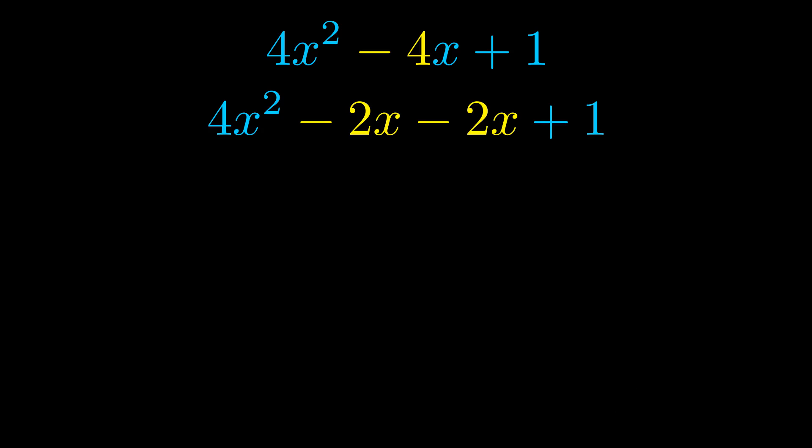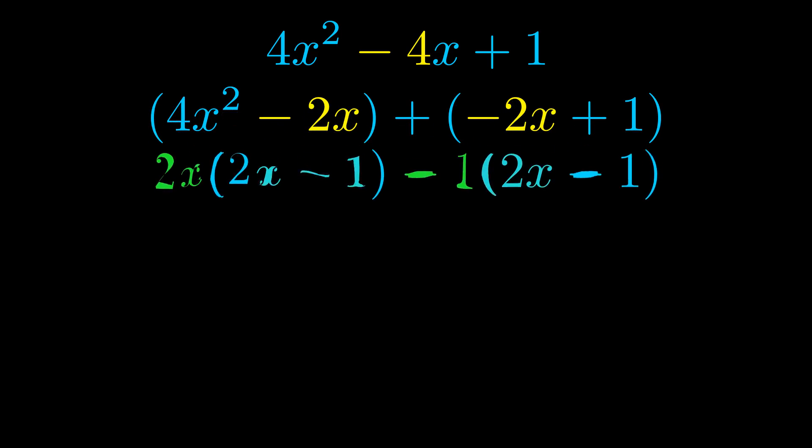Once we've done this we go ahead and we put parentheses around the first term and the last term and we do that so that we can take the greatest common factor out of both terms. We can see the greatest common factor is now outside in green.